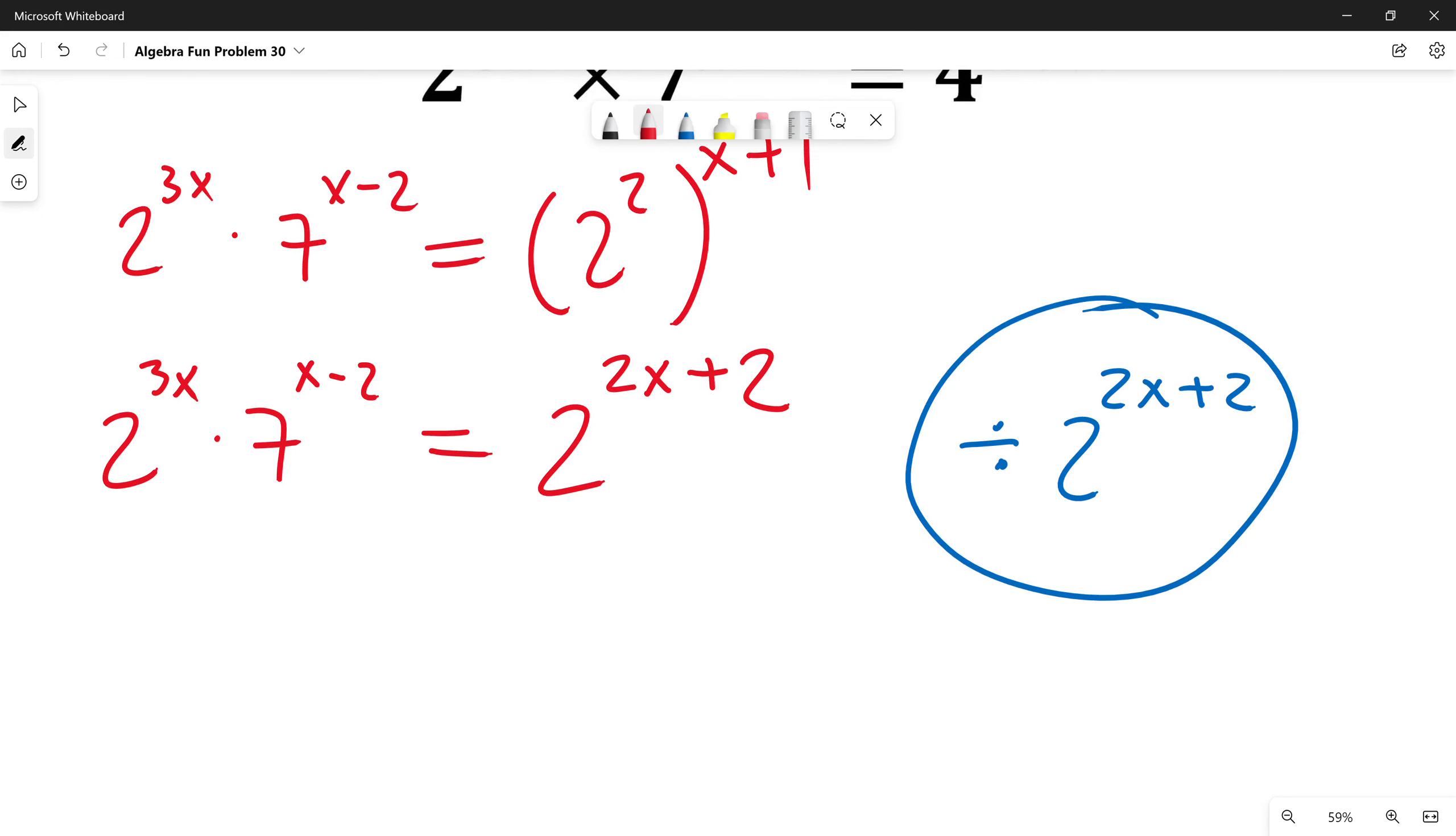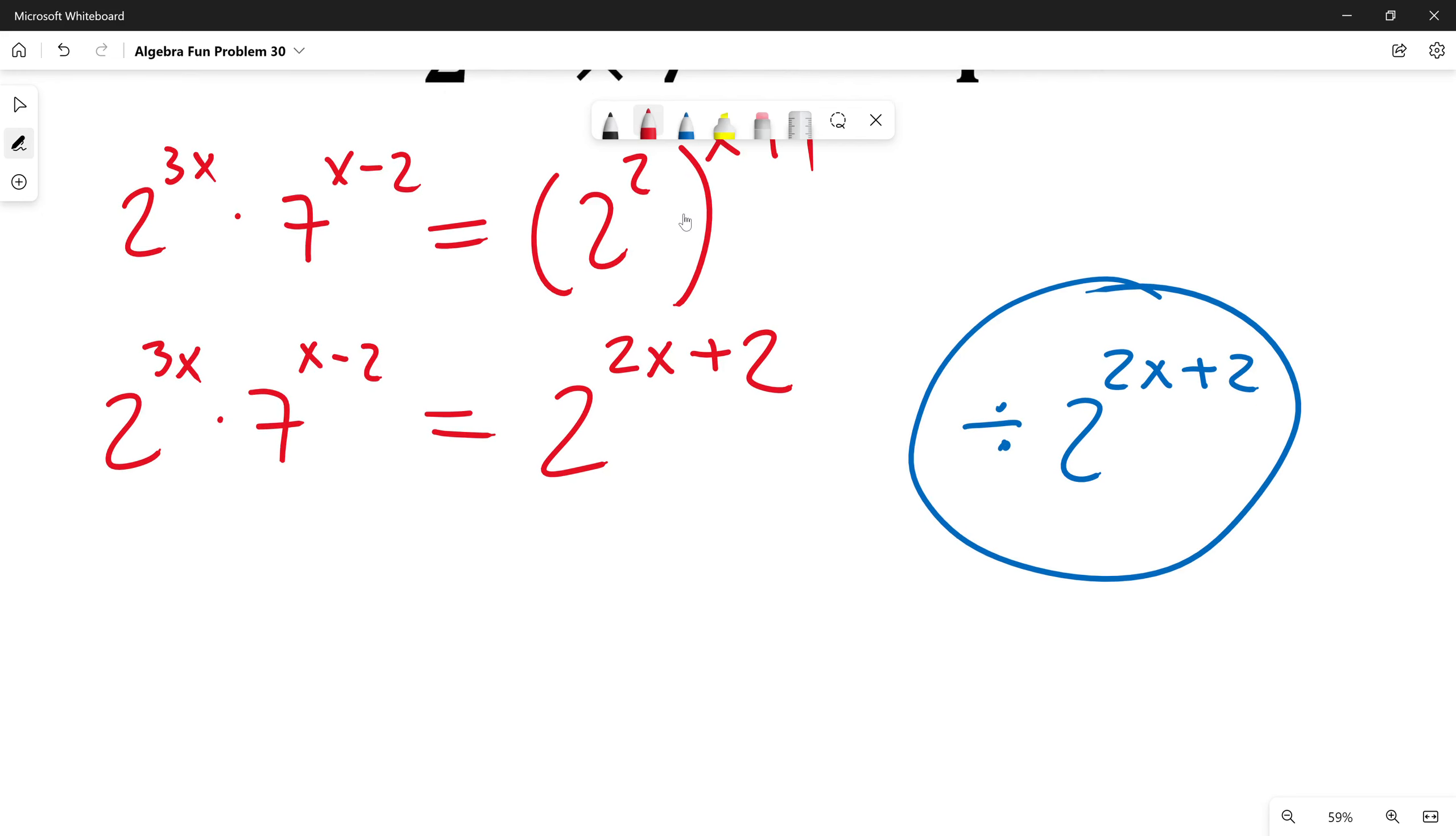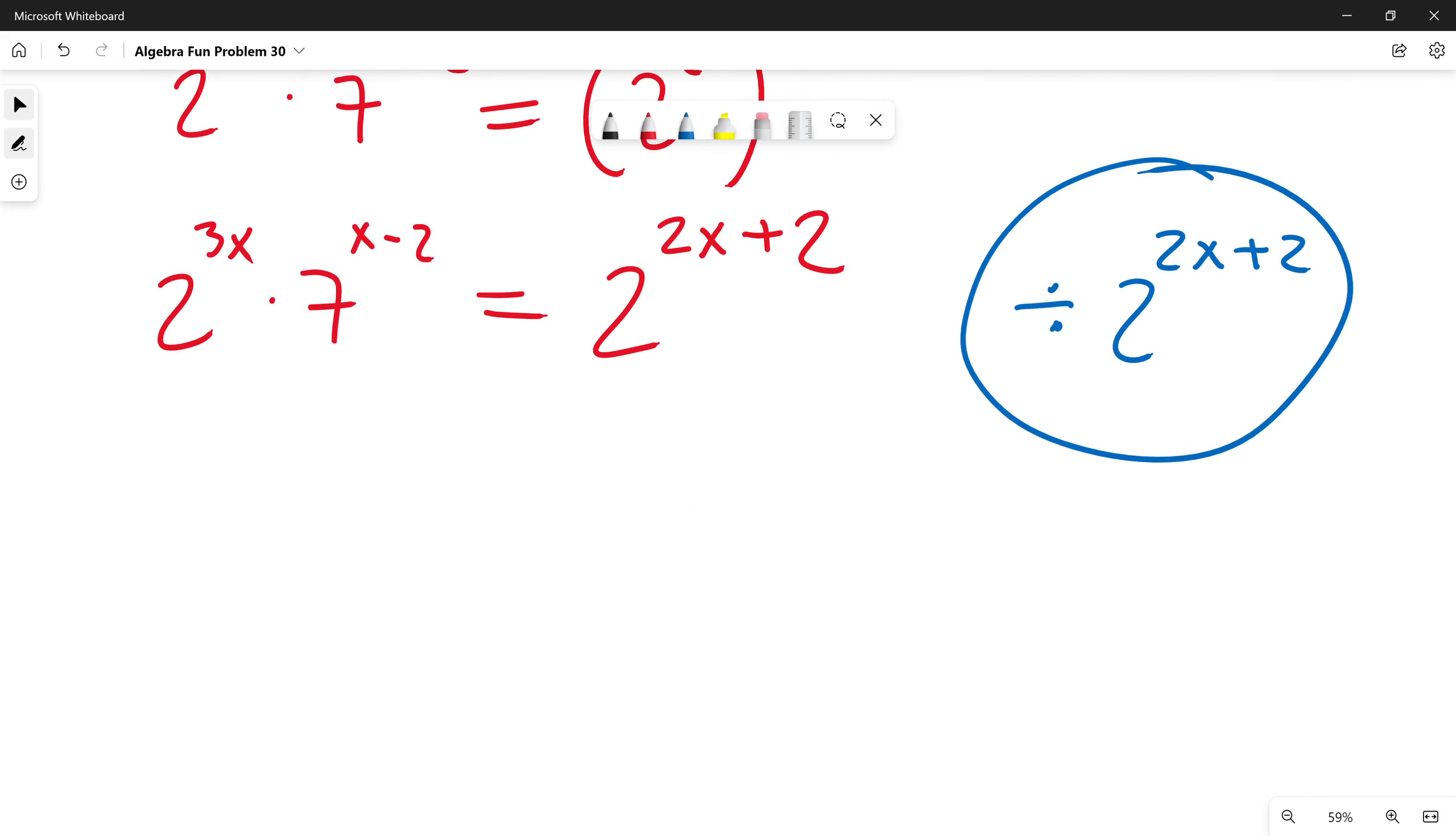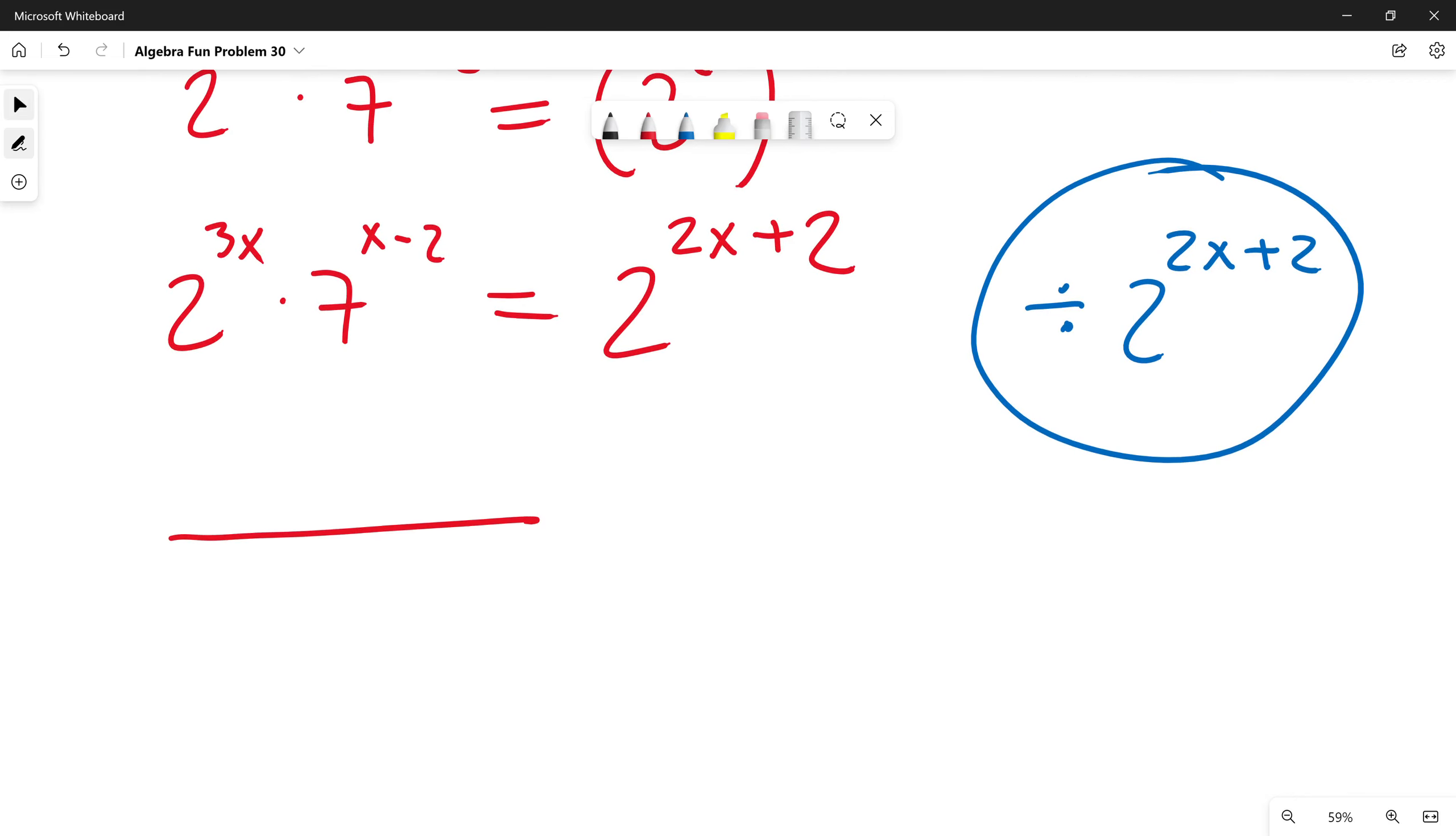Then I will write it as 2 to the power of 3x divided by 2 to the power of 2x plus 2, times 7 to the power of x minus 2. On the right side of the equation this will be just 1, because the same thing divided by the same thing is 1.